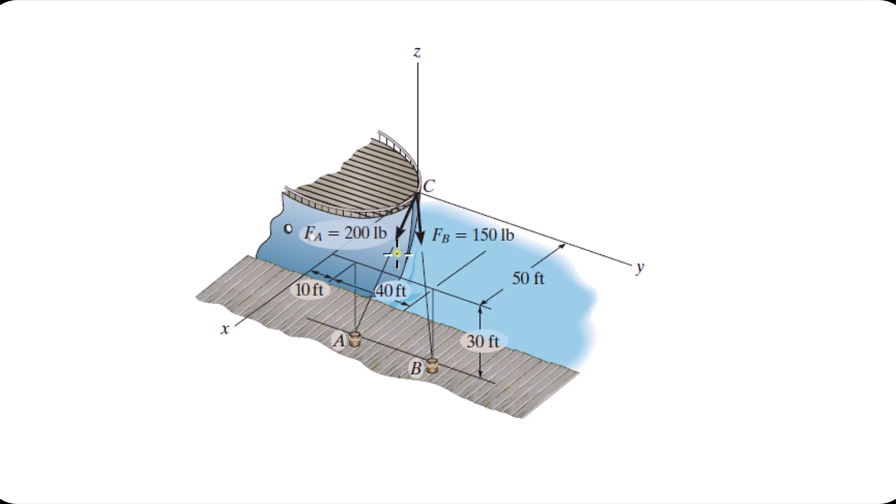That original vector that you create can be any vector, absolutely any vector, but a lot of times what you'll use is a position vector. So a position vector that gives the relative orientation between C and A, divide that vector by its magnitude, and now you have a unit vector in that direction.